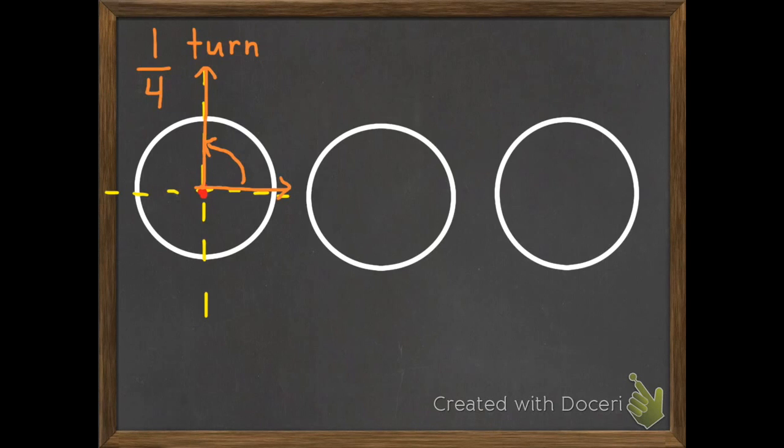Later on we're going to get into degrees. A circle has 360 degrees, and if we're dividing the circle into four, each part of the circle would have 90 degrees. So we won't need this today, but I just want you to know that for the future, one-fourth of a turn or one-fourth of a circle is 90 degrees.